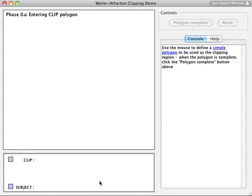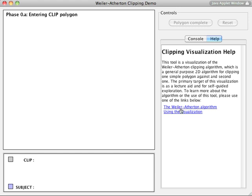This AV demonstrates the Weiler-Atherton clipping algorithm for two polygons. An integrated help page shows information about how to work the AV.